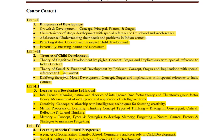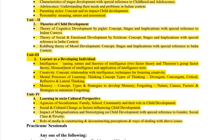Unit 2 mein aap padhenge kaun-kaun se theorists ne kya-kya theories di hain - jaise Kohlberg, Piaget, Erickson. Inhone bahut saari research bacchon ke upar ki aur tab jaake observations likhi hain. Make sure isko skip na karein - yahan se questions bahut important hain. Aage jaake aapke TET exam ke liye bhi yeh subject bahut important hai, toh isko skip na karein, ek-ek cheez achhe se samjhein.